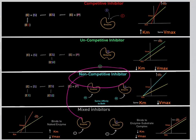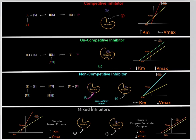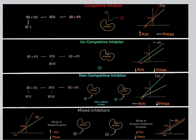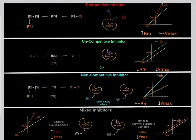If the mixed inhibitor has the same affinity for both the naked free enzyme and the enzyme-substrate complex, then that's called a non-competitive inhibitor. So non-competitive inhibitors are a type of mixed inhibitor that doesn't mind whether it binds to the naked enzyme or the enzyme-substrate complex — it has the same affinity for both. This image summarizes all the enzyme kinetics information you need for the MCAT, and the next video will go into more detail on Lineweaver-Burk plots, KM, and Vmax.